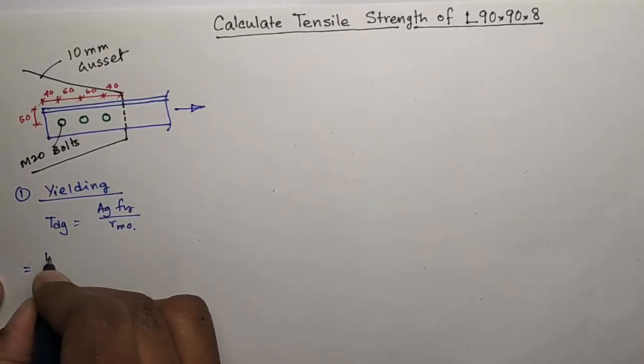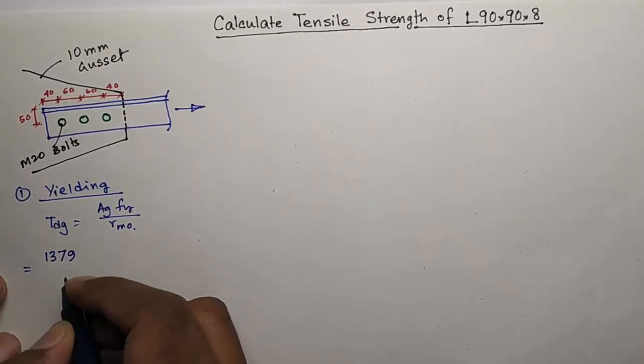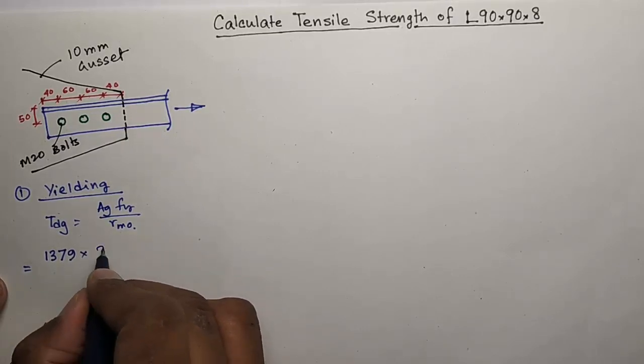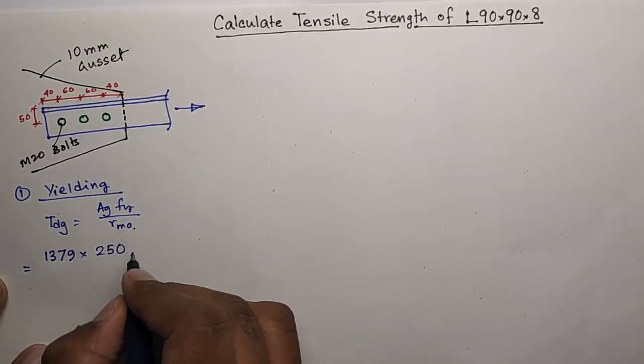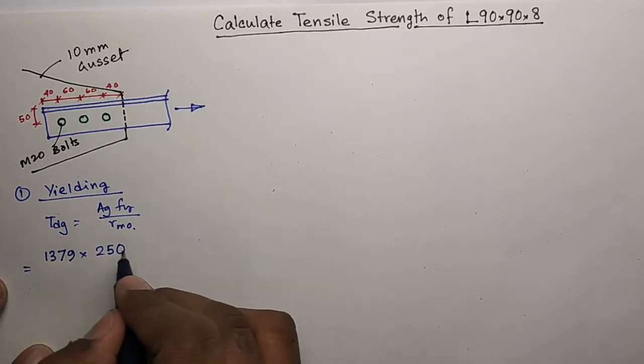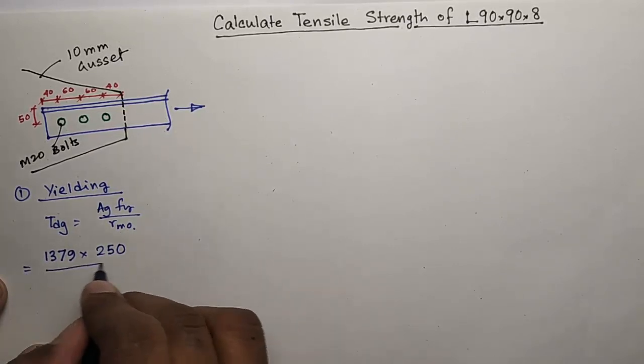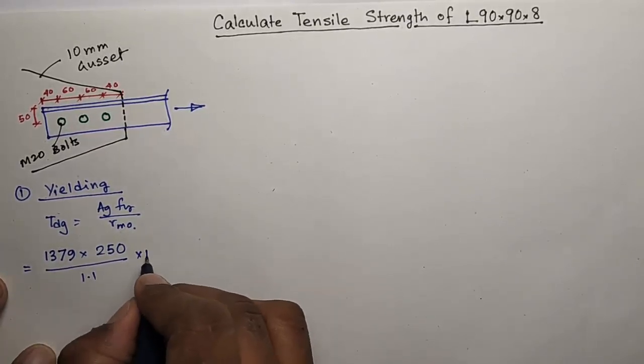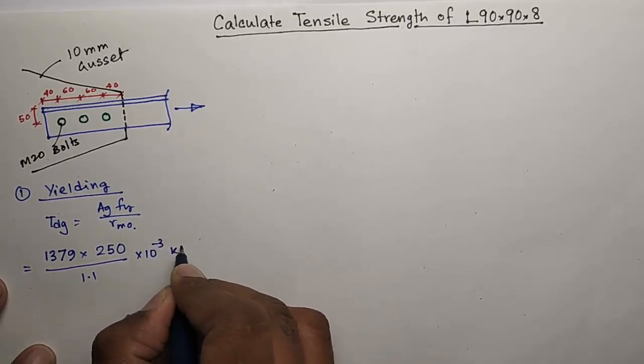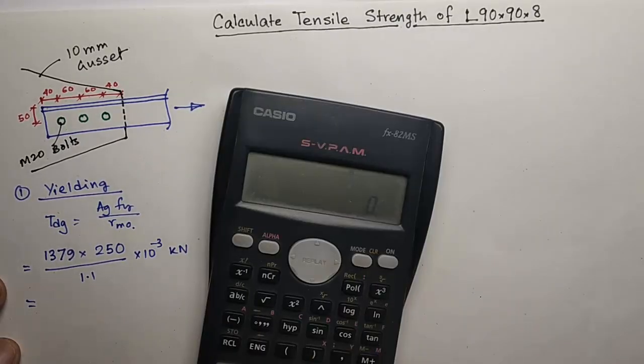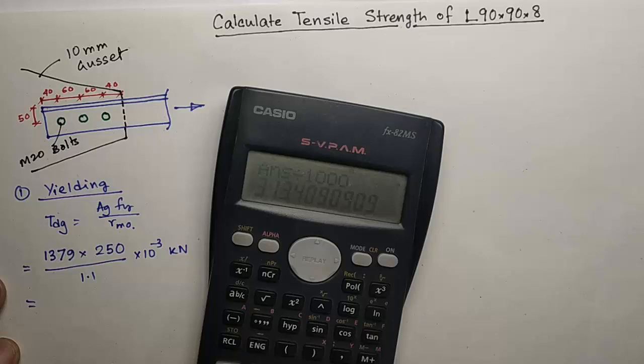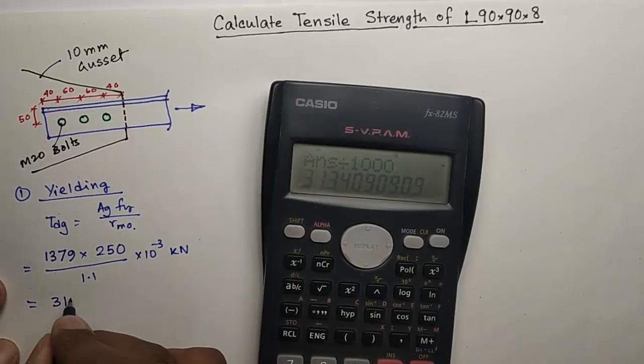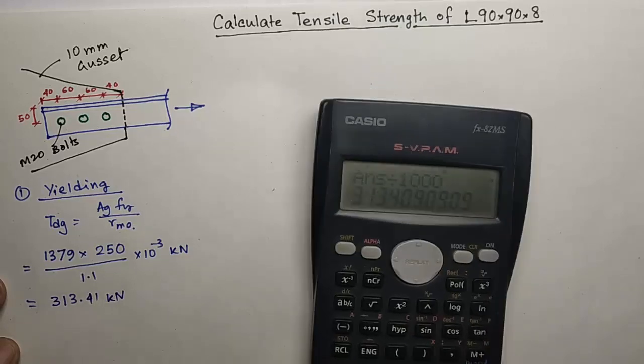13.79 cm square means 1379 millimeter square times 250 Newton per millimeter square. We get this in Newton, times 10 to the power minus 3 for kilonewton. So 313.41 kilonewton is the design strength due to yielding.